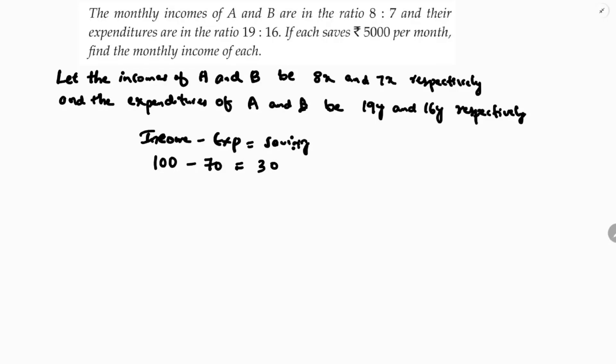So here income minus expenditure will give you the savings. Income of the first person A is 8x and expenditure is 19y, so 8x minus 19y equals 5000. Similarly for B, 7x minus 16y equals 5000.